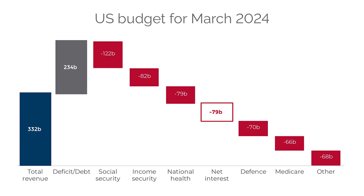So how did the U.S. get here? Well, for starters, the U.S. spends more money every year than what they earn, and this is termed a deficit, and this deficit is funded by debt. To look at a practical example — the March 2024 U.S. budget — total revenue, which comes almost exclusively from tax receipts, was 332 billion dollars. Total expenses, shown in red, totaled 566 billion dollars, leaving a shortfall or deficit of 234 billion dollars, funded by debt.